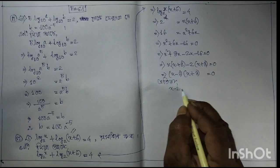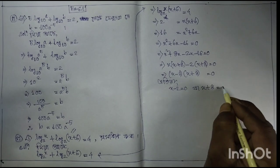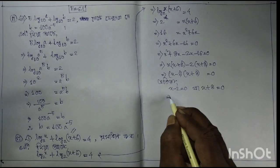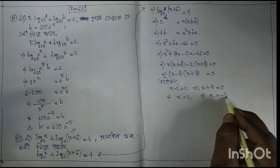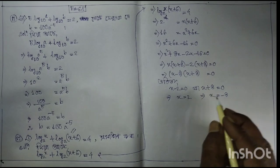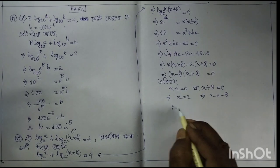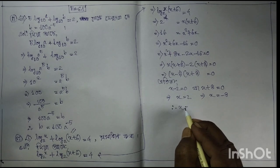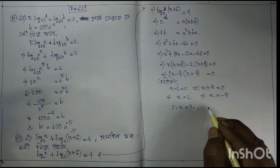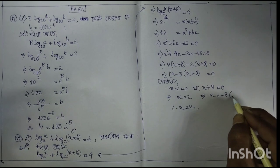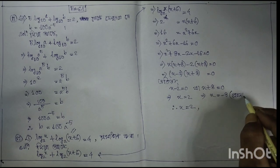Therefore x − 2 = 0 or x + 8 = 0, implies x = 2 or x = −8. Since logarithm requires positive arguments, x = −8 is rejected. Therefore x = 2.